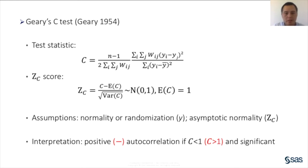For Geary's C test, the statistic uses squared differences of neighboring values and is always non-negative. The test score for Geary's C also follows the standard normal distribution asymptotically. Under the null hypothesis, the expected value of C is 1. The variance of C can be computed under the assumption of normality or randomization. A C value significantly less than 1 indicates positive autocorrelation, whereas a C value significantly greater than 1 indicates negative autocorrelation. This is contrary to Moran's I test, where a significant positive Moran's I index indicates positive autocorrelation. As a result, Geary's C is often said to be inversely related to Moran's I.